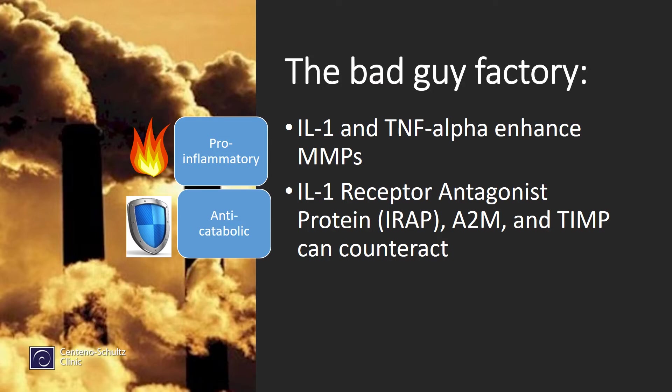What's interesting is that when there's a lot of inflammation — like with IL-1 and TNF-alpha — those enhance the activity of MMPs. We also have chemicals that can stop some of this breakdown, what we call anti-catabolic: things like IRAP (IL-1 receptor antagonist protein), A2M, and TIMP — they can all counteract breakdown.